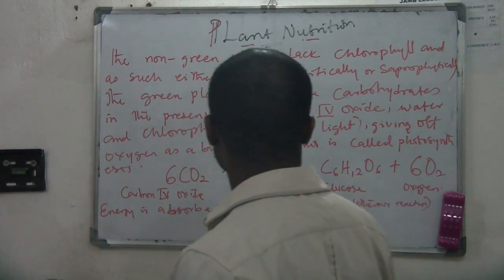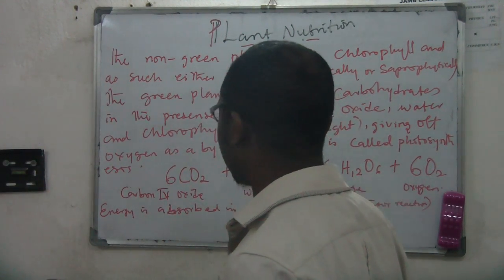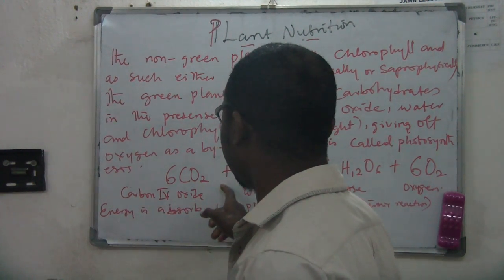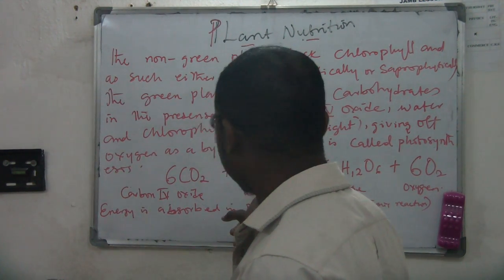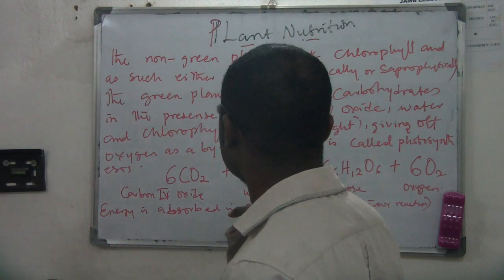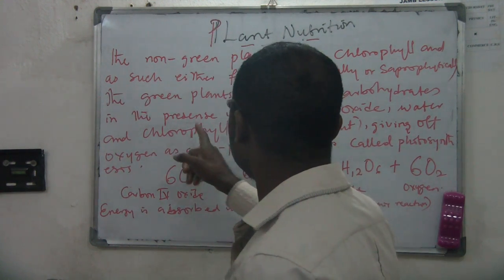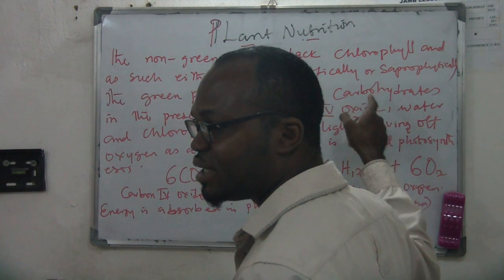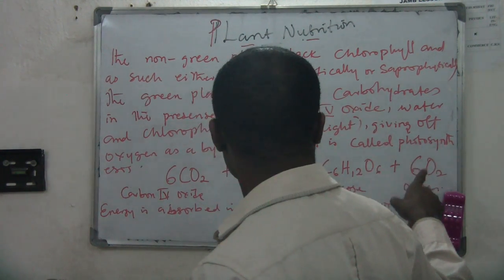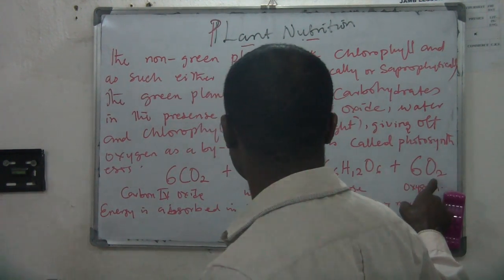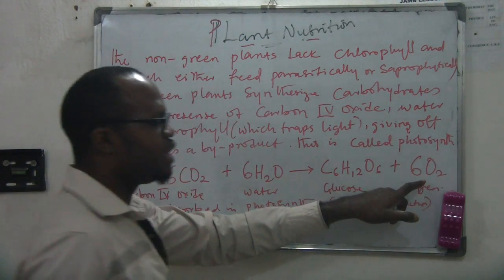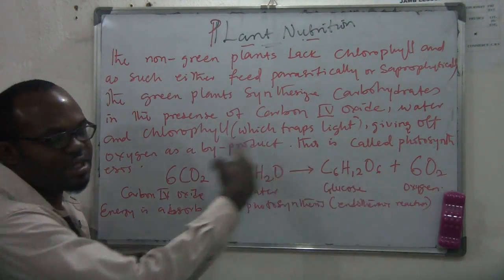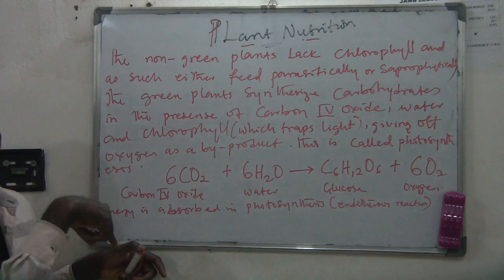This is the chemical equation for photosynthesis: carbon dioxide reacts with water, in the presence of light and chlorophyll, to give glucose. This glucose is the carbohydrate that is synthesized, and oxygen is given off as the byproduct.